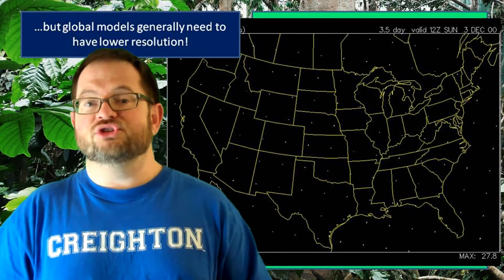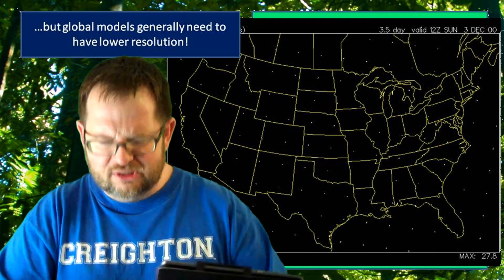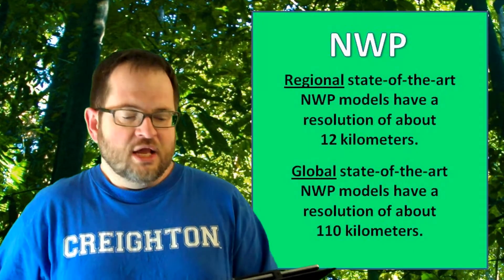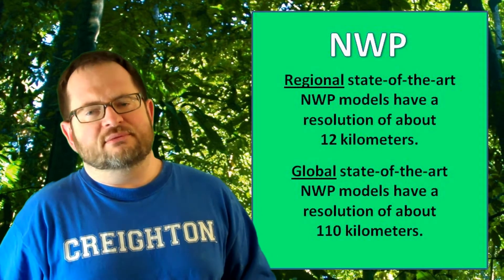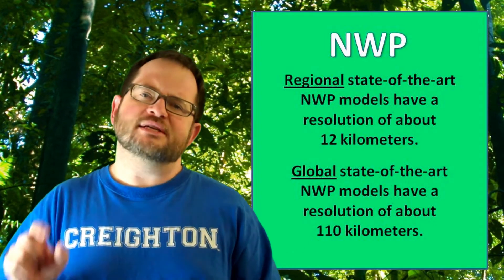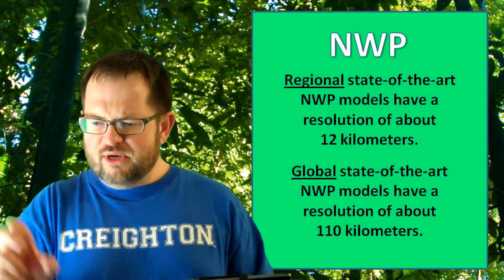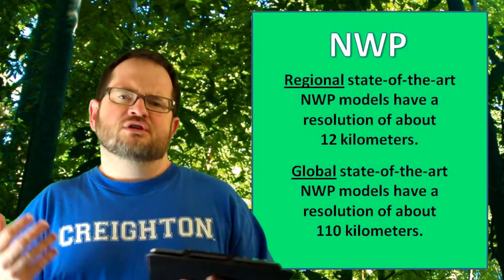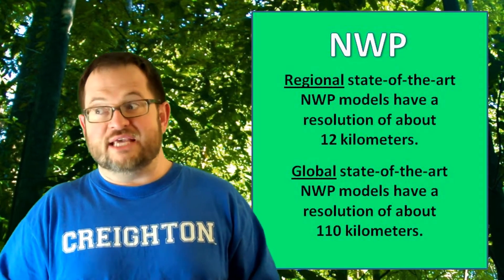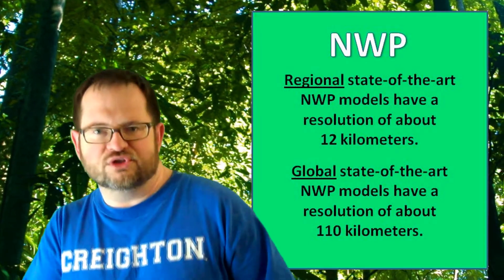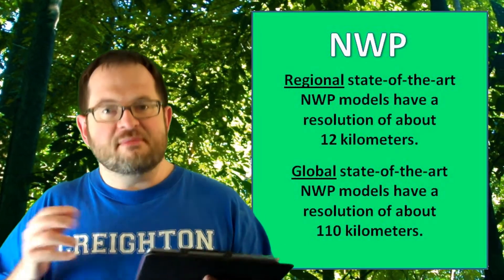For climate purposes, we're only going to be able to use global models, because we need to understand globally how the climate system is working. But for a forecast of what the weather is going to be doing 48 hours from now, these regional models are often good enough. The current state of the art for regional models is to have a resolution of about 12 kilometers — grid points about 12 kilometers apart, which is about 8 miles. So there are multiple grid points over a city like Omaha, and the model can distinguish differences between temperatures downtown versus out in the suburbs.